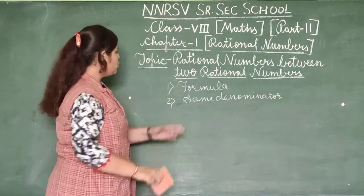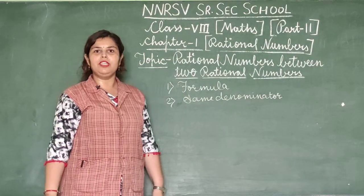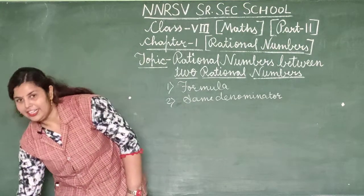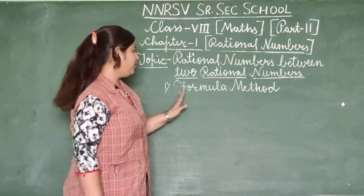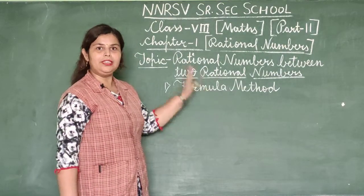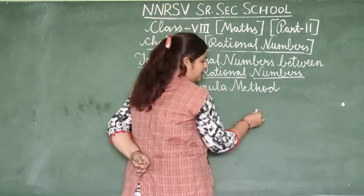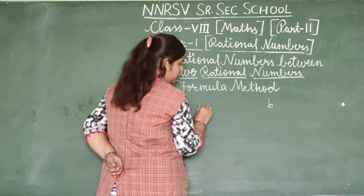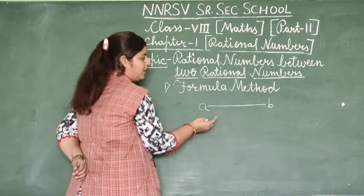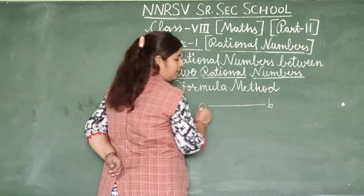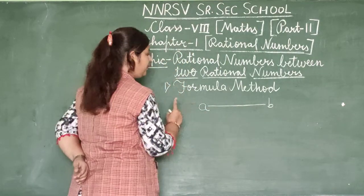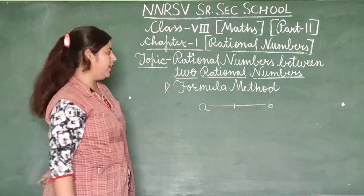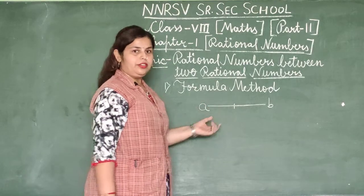By these two methods we can find rational numbers between two rational numbers. Let us start with the first method, that is the formula method. In the formula method, we use the average method.